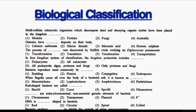First question: multicellular eukaryotic organisms which decompose dead and decaying organic matter have been placed in which kingdom? Option 1: Monera. Option 2: Protista. Option 3: Fungi. Option 4: Animalia. The correct answer is Option 3, that is Fungi.